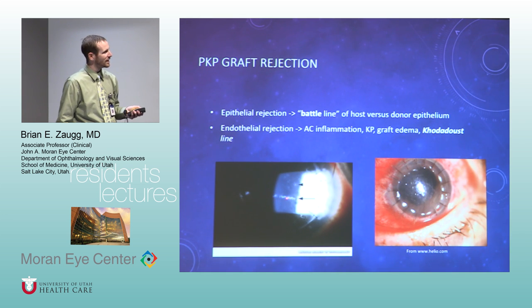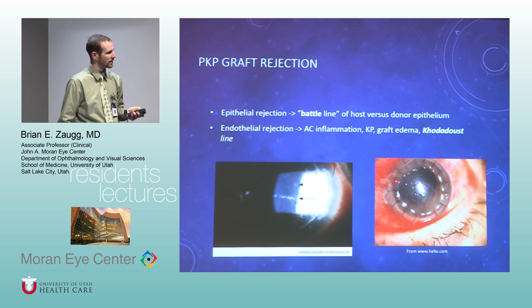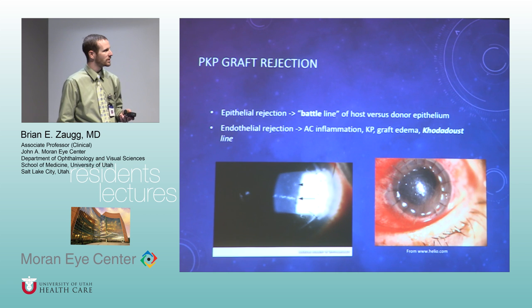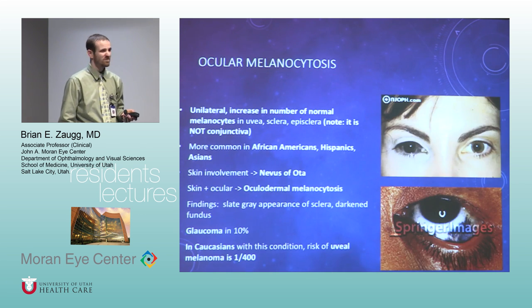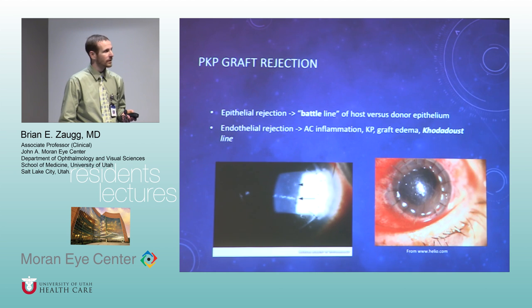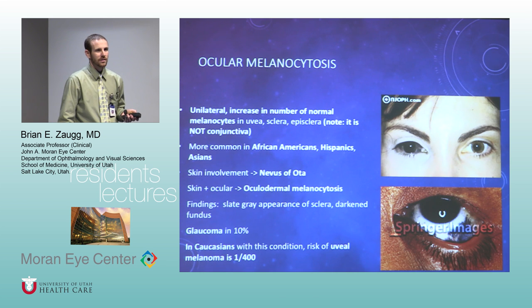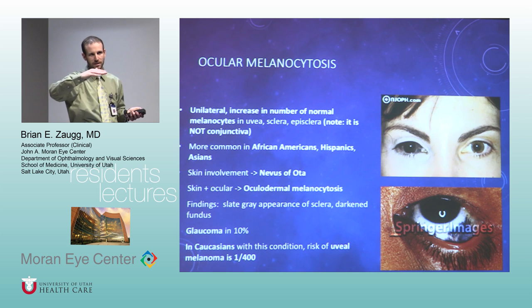Graft rejection: watch out for Khodadoust lines — a sign of endothelial rejection where a line of KP marches across the endothelium, destroying it. You'll see it regress as it improves but usually leaves fibrosis and damage. We have a patient at the VA right now where we were able to reverse it — it went from two thirds to one third of the cornea affected.